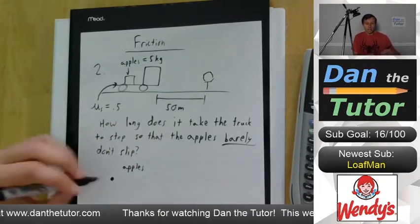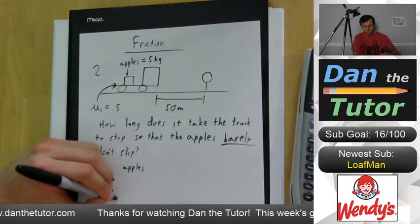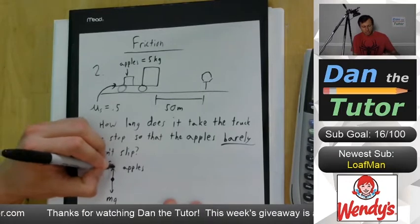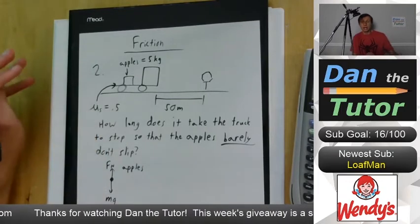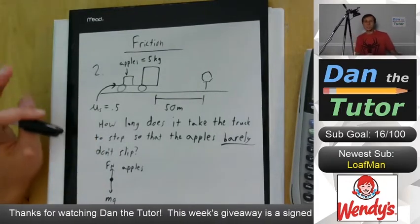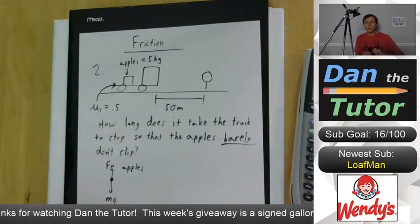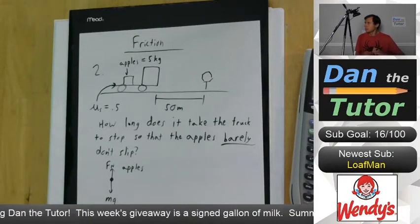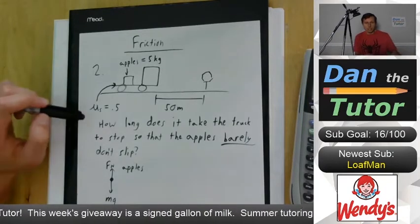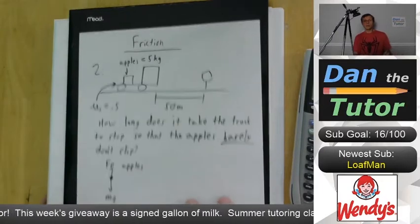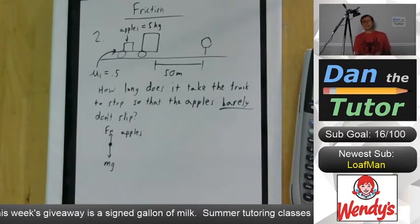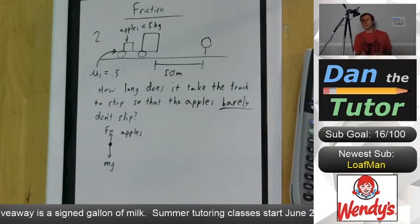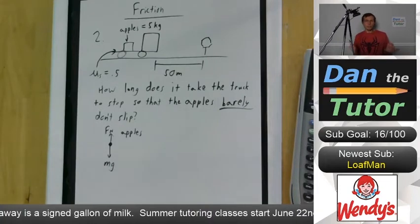If we make a free body diagram just for the apples, going down we have gravity — mg. Going up we have a normal force, Fn. What's the force that's causing these apples to slow down? The third force acting on these apples is friction. The difficult question is: which way does that friction point?